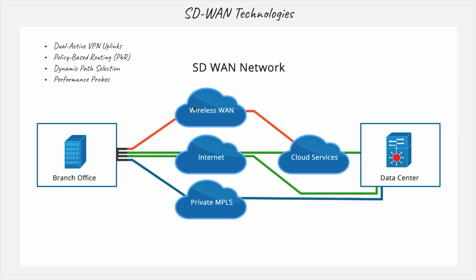What kind of elements do you have here? The wireless WAN, the internet, and the private MPLS. You have the same setup in the branch office, and you're going to have your router here that is going to connect with the three different elements. To make it software-defined, there are different components — we can cover these four here in this video.